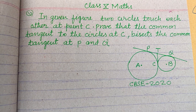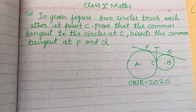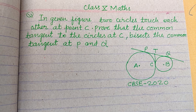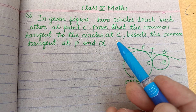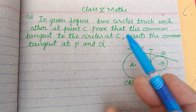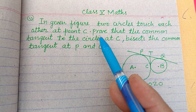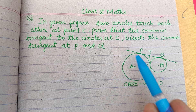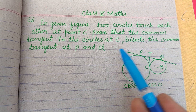Hello viewers, warm welcome to this YouTube channel. This is a question from CVSC 2020 board exam. In the given figure, two circles touch each other at point C. Prove that the common tangent to the circles at C bisects the common tangent at P and Q.